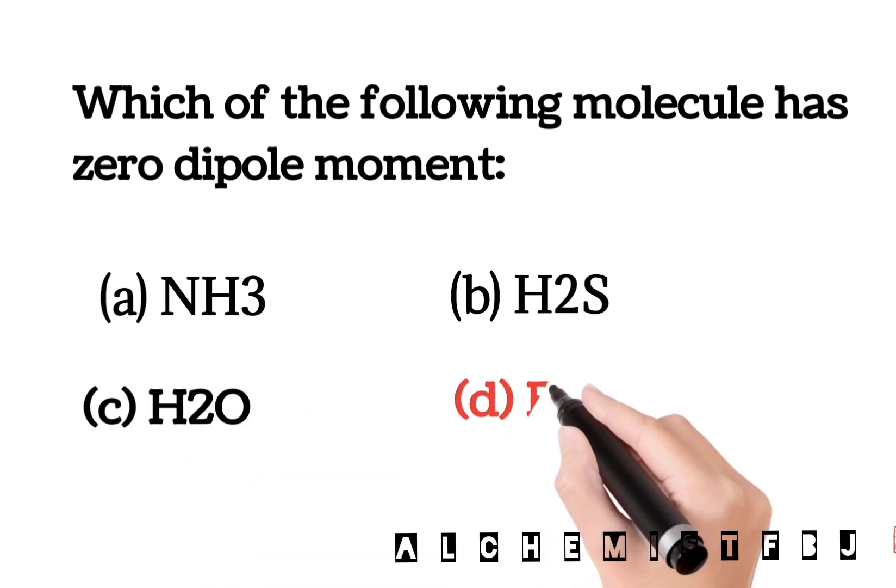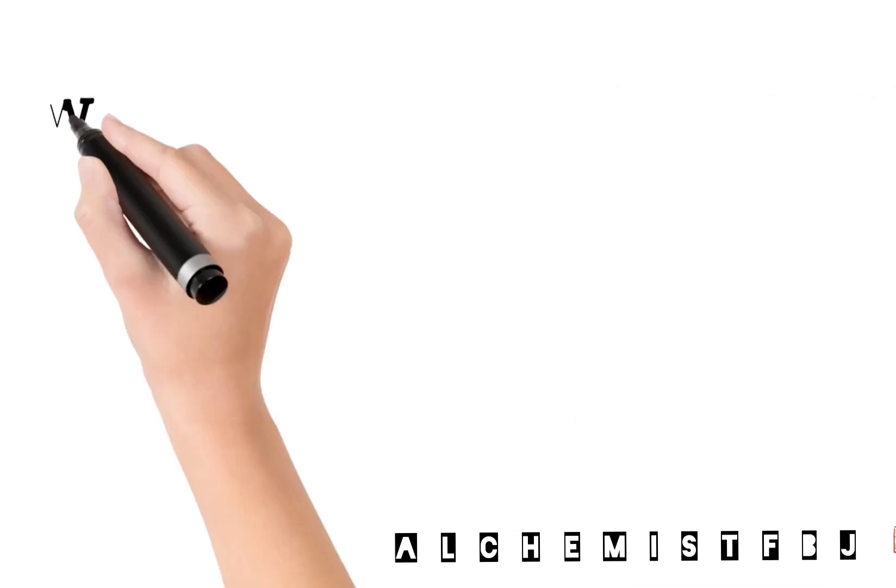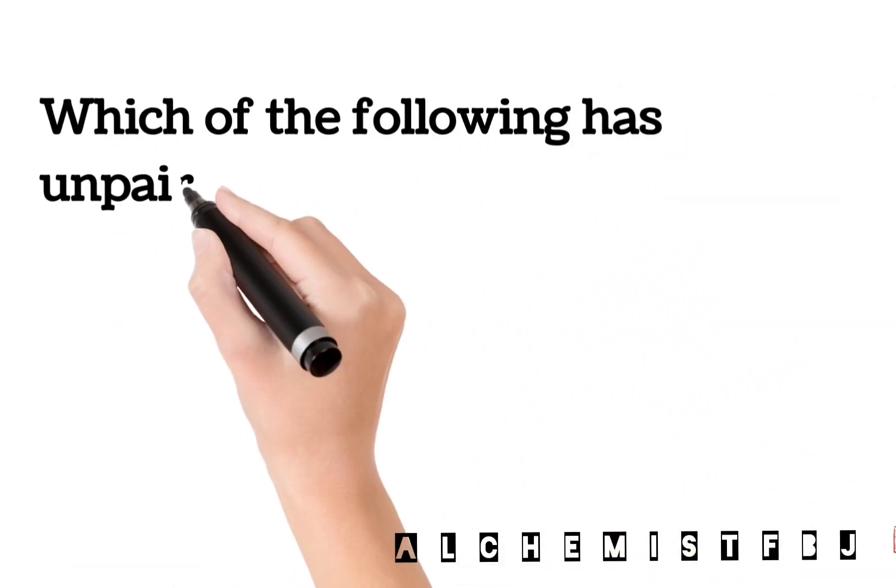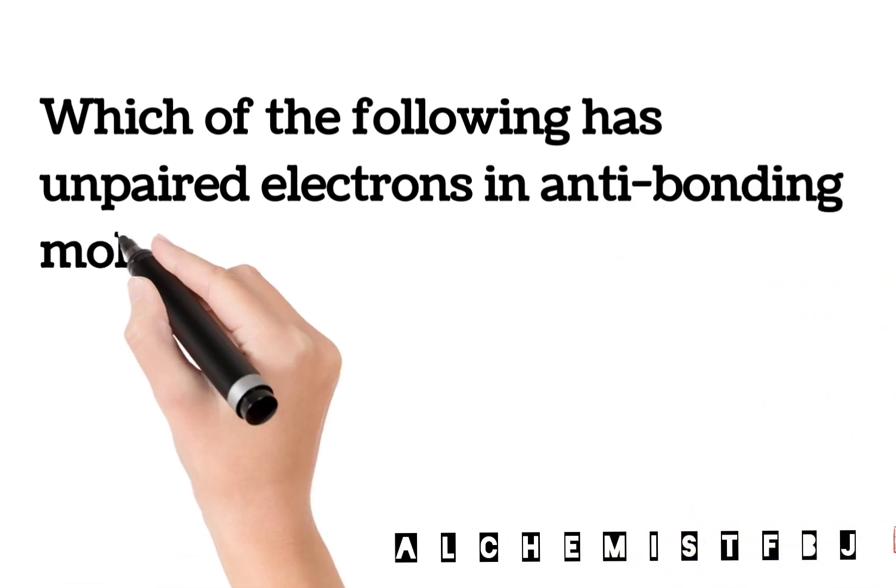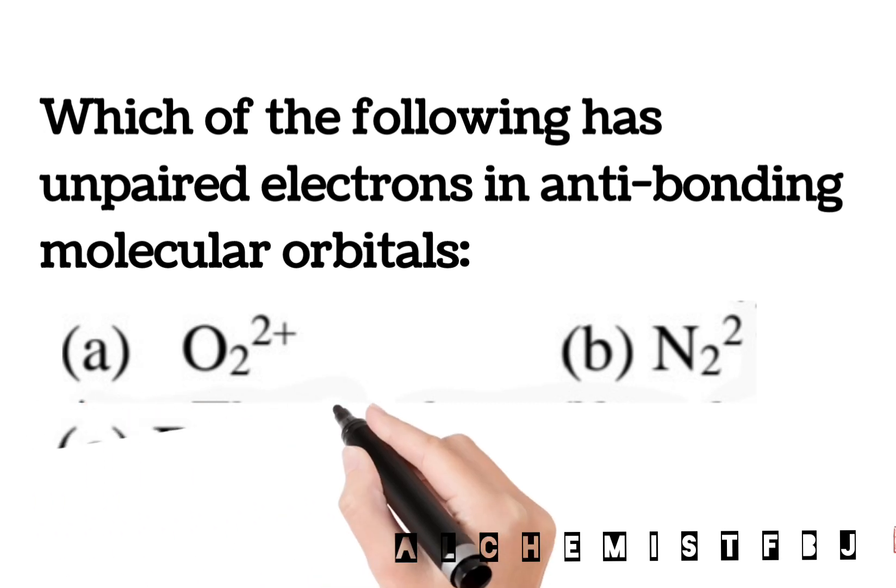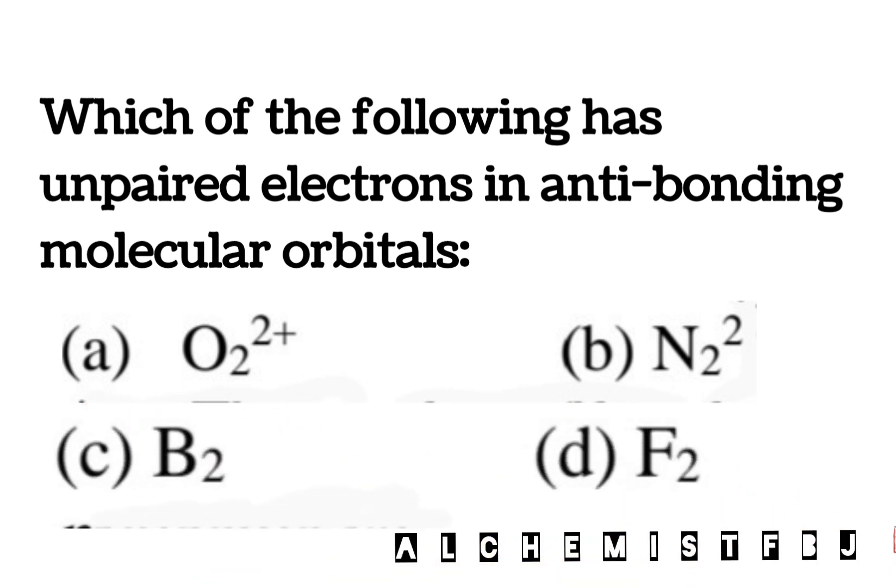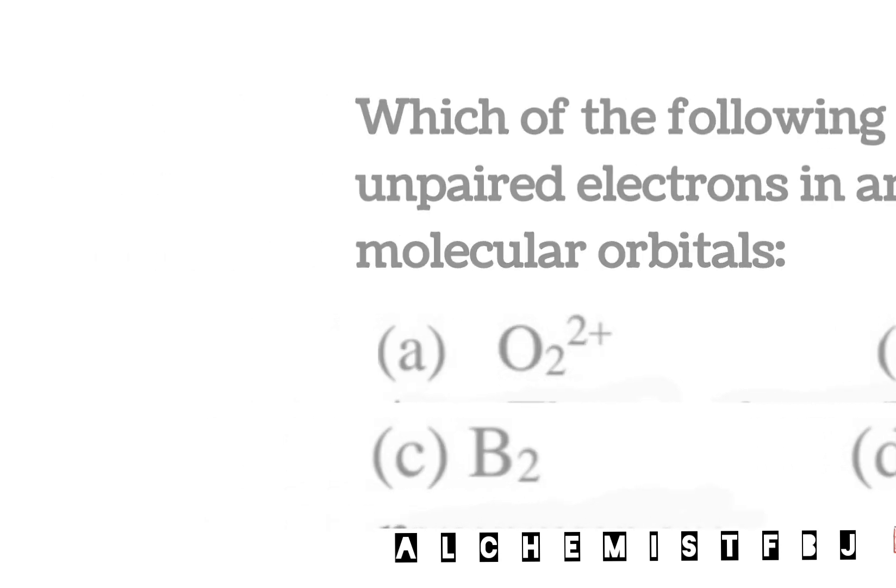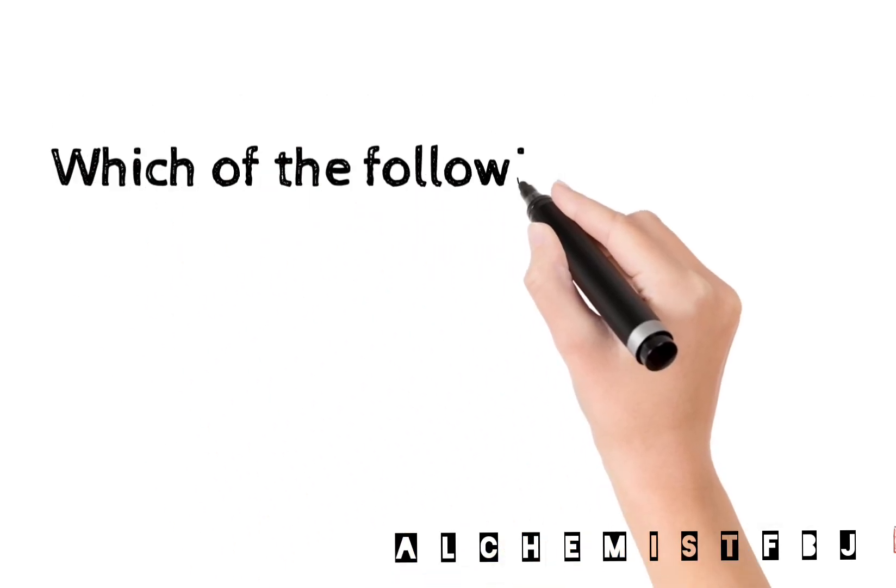Next, which of the following has unpaired electrons in anti-bonding molecular orbitals? Options: O2+, N2-2, B2, and F2. Correct option is N2-2. Which of the following has bond angle of 120 degrees? Options: BeCl2, BF3, CH4, and NH3.